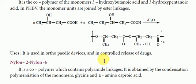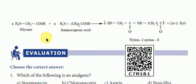Nylon 2-nylon 6 is a co-polymer which contains polyamide linkage. It is obtained by the condensation polymerization of monomers glycine, omega-amino caproic acid, and 2-hydroxybutanoic acid. The repeated alternating units of glycine and amino-caproic acid react to form the alternating copolymer.